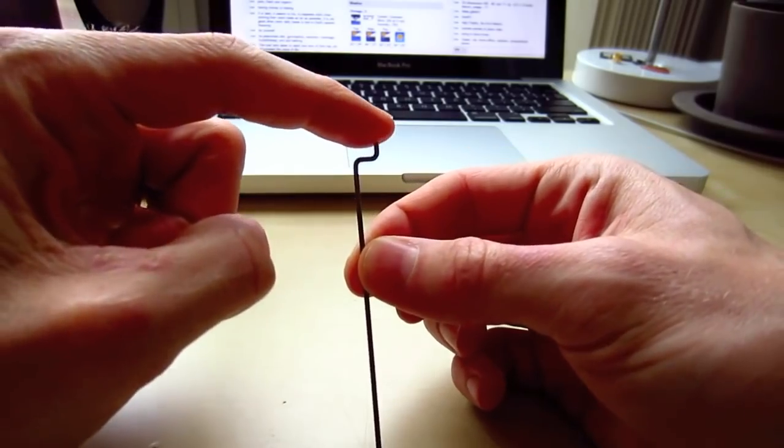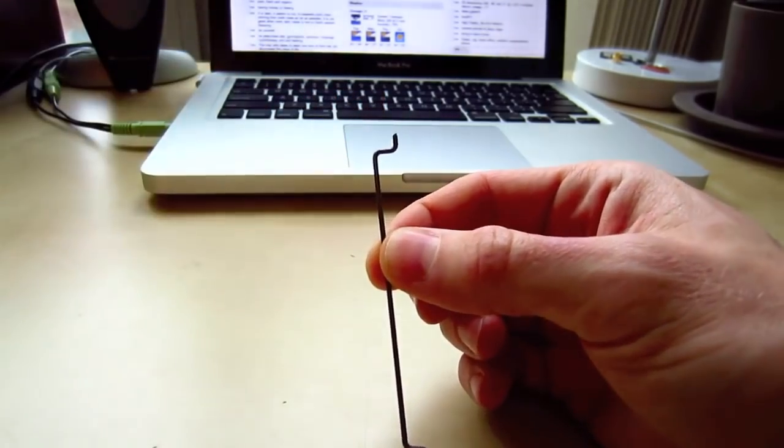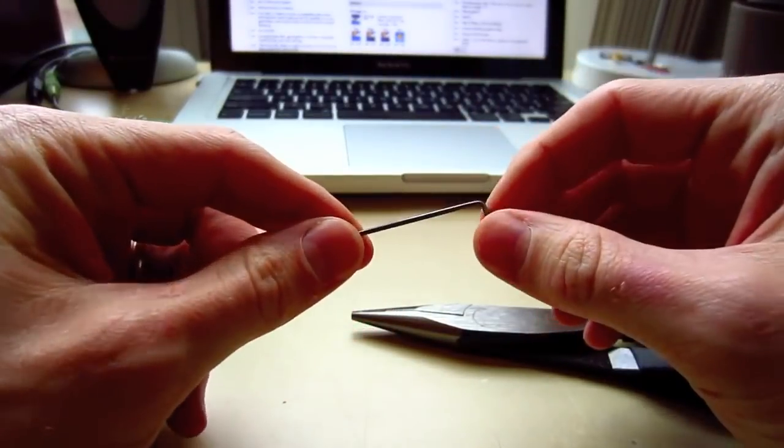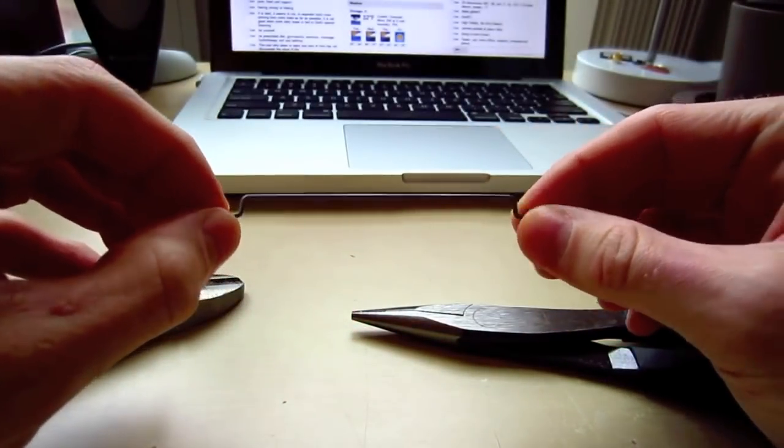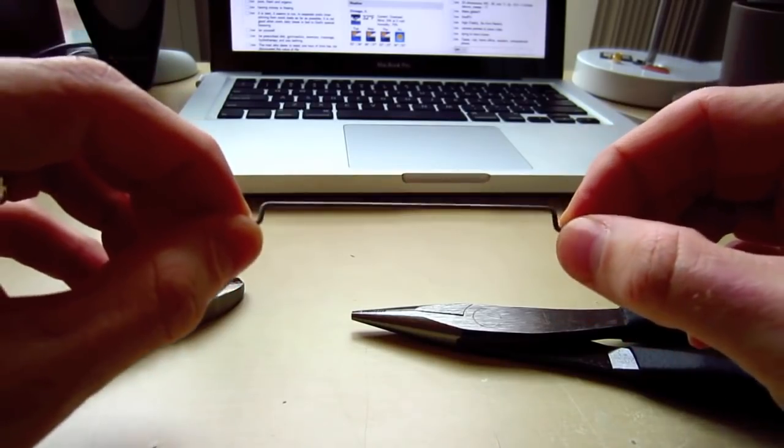And so, there are wire Z-benders you can get, but I just found just using needle nose pliers and a pair of wire cutters, it works perfectly fine. So, that's how I do mine. It's a really cheap way, and I hope this helps.